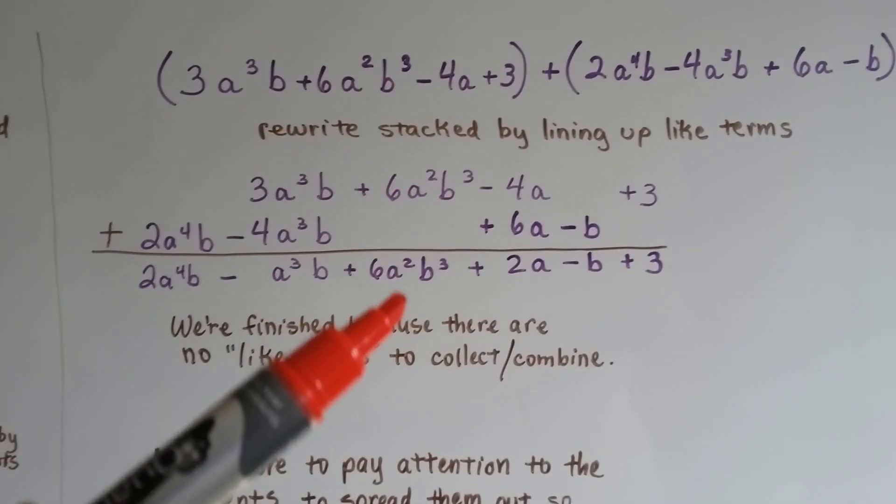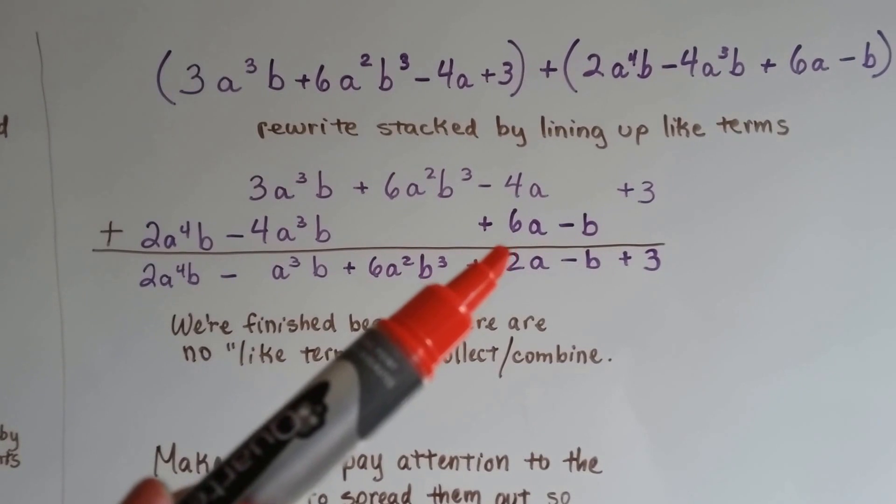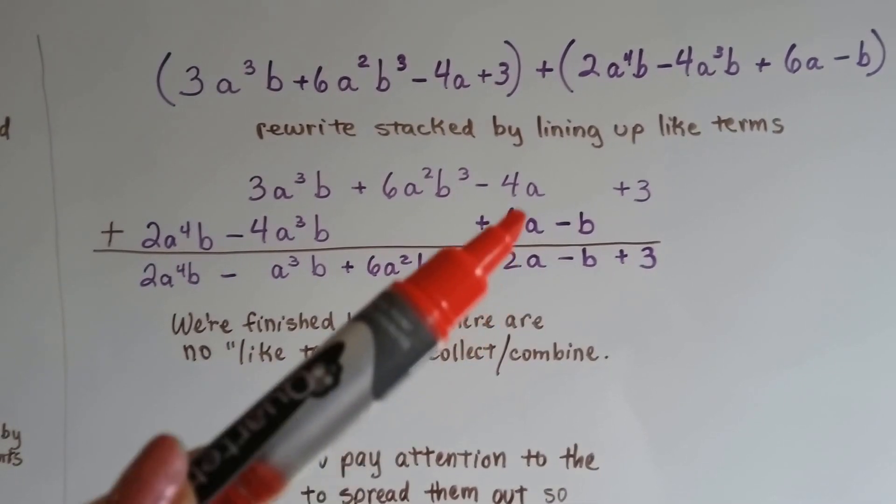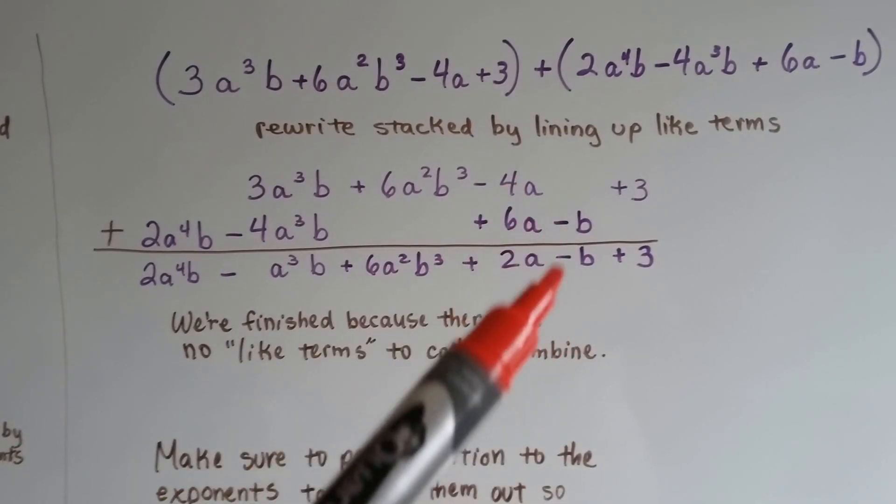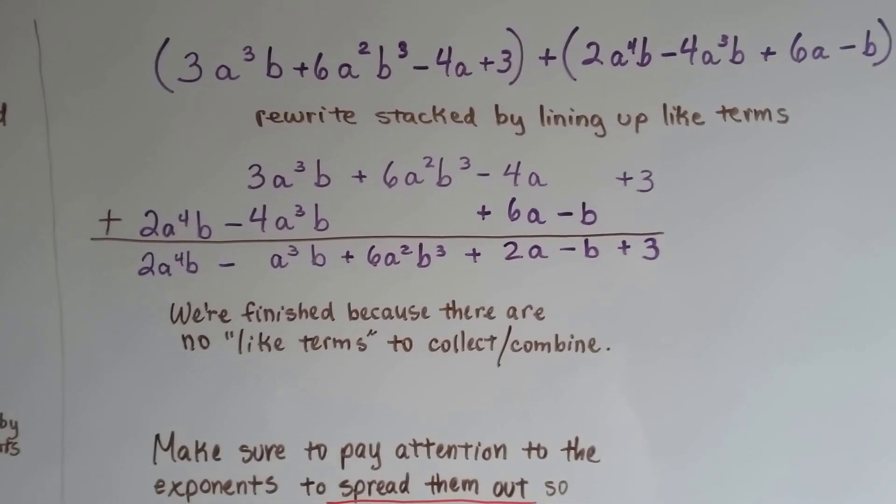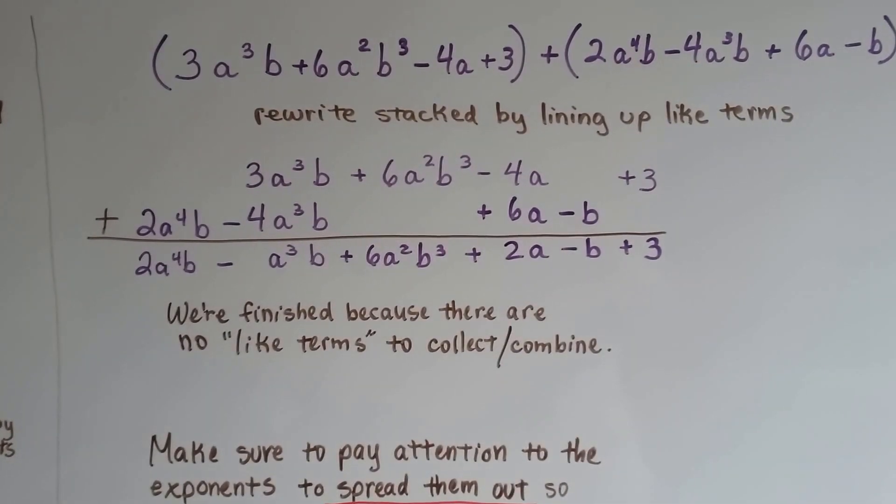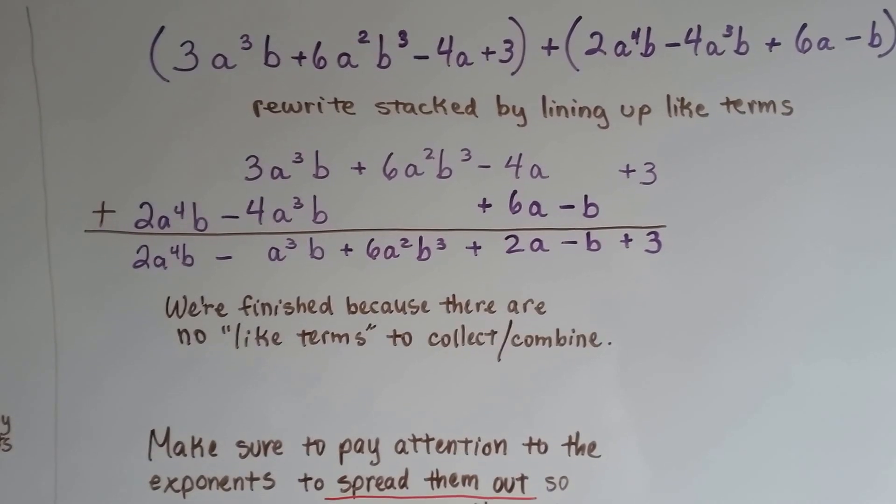We drop down this guy. Negative 4 plus 6 is going to be a positive 2 with the a. We drop down that minus the b and we drop down the plus 3. And we're finished because there's no like terms to combine or collect.